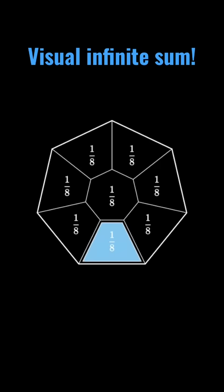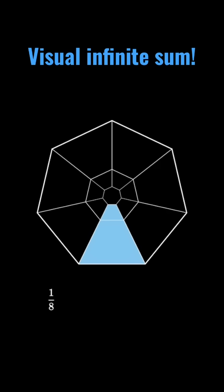Now let's continue this again on the inner heptagon. Now we have another shaded region of 1/8th times 1/8th, or 1/8th squared.